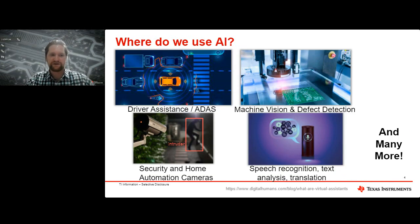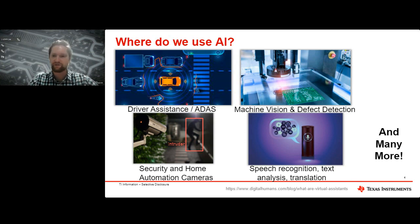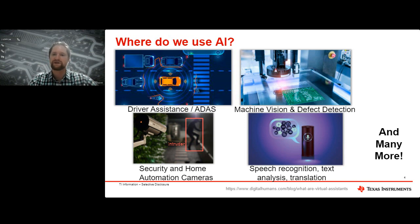Applications are widespread and increasingly so. One of the main spaces we've seen this start in is driver assistance or ADAS. We also see this in machine vision and defect detection, where products come down an assembly line quickly and you need to determine whether something is wrong. We see this in security and home automation — cameras can have hours and hours of footage, and machine learning can help turn that into something actionable, like flagging an intruder. The same is true for speech recognition and text analysis, including large language models like ChatGPT.